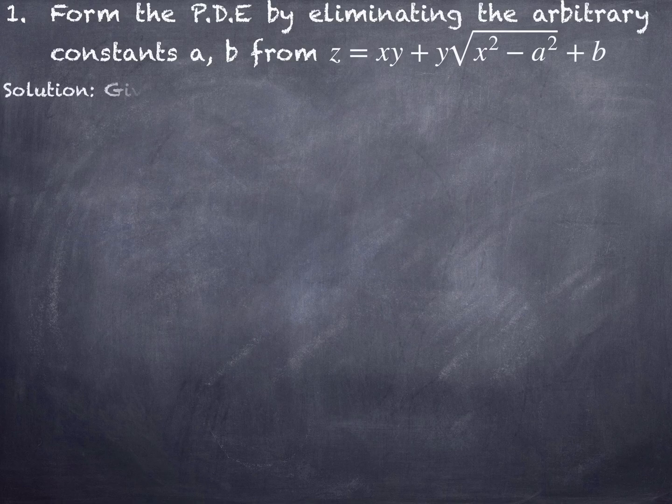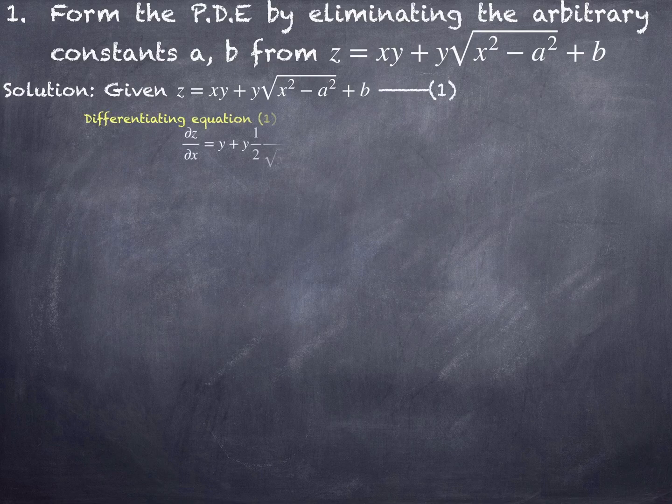Consider the given equation as number 1 and differentiating partially with respect to x, we get ∂z/∂x equals: y is a constant so differentiation of x is 1; plus y is constant, differentiation of √(x²-a²) is 1 over 2√(x²-a²) times 2x; and differentiation of b is 0.